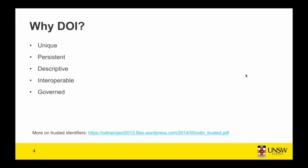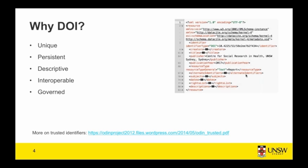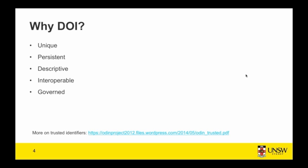That's the predecessor project to THOR. This term captures a set of characteristics: trusted identifiers are unique on a global scale, they resolve as HTTP URIs persistently, and they're descriptive — they come with metadata that describe their most relevant properties. There's a mandatory set of metadata elements like creators, title, publisher, publication year, and resource type, and then you can add recommended or optional elements like alternate identifiers, subjects, dates, rights information, description and so on.